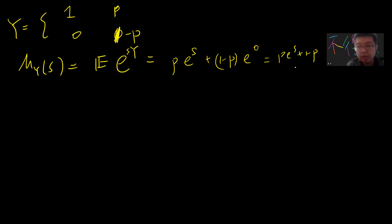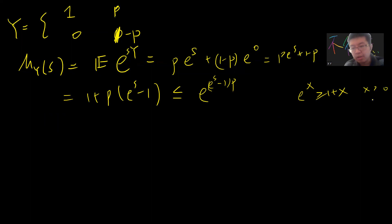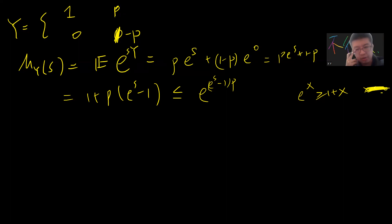This form is a bit hard to manipulate, but we can bound it. We write 1 + p(e^s − 1), which is less or equal to exp(p(e^s − 1)). The useful tool here is that exp(x) ≥ 1 + x, so 1 + x ≤ exp(x). Hopefully you know this inequality.